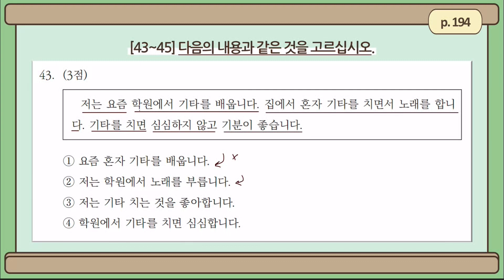Number 2: 저는 학원에서 노래를 부릅니다 — I sing at 학원. No, he sings at home — 저는 집에서 혼자 기타를 치면서 노래를 합니다. Number 3: 저는 기타 치는 것을 좋아합니다 — I like playing the guitar. Yes, he said 기타를 치면 기분이 좋습니다. Number 4: 학원에서 기타를 치면 심심합니다 — playing the guitar at the 학원 is boring. Well, he didn't mention that, and in fact playing the guitar helped him avoid getting bored — 기타를 치면 심심하지 않고. So the only sentence that matches the text is number 3: 저는 기타 치는 것을 좋아합니다.